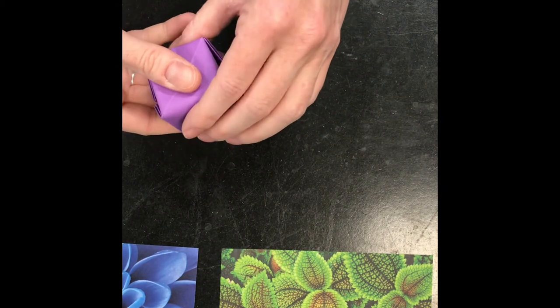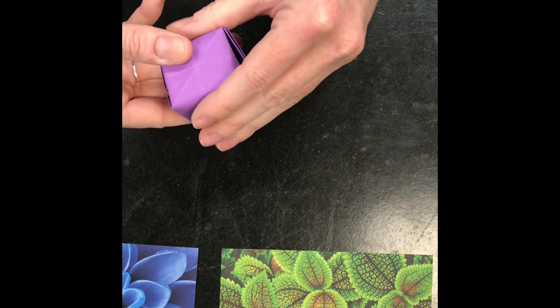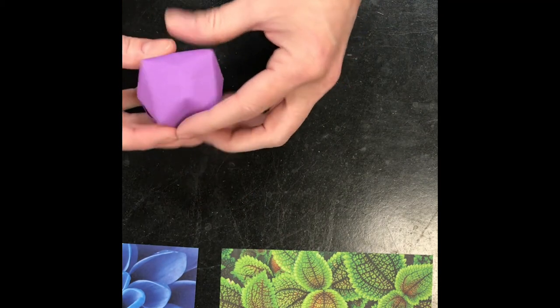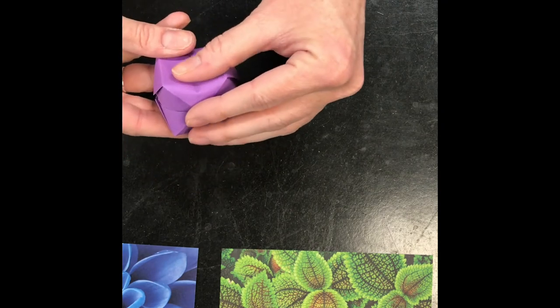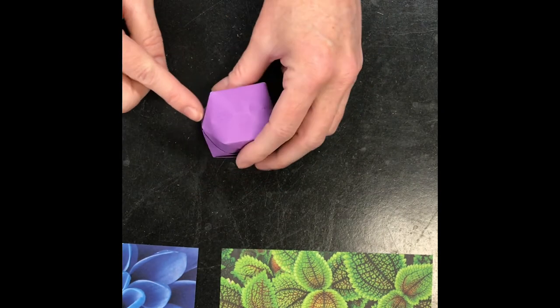And you can kind of rework it to make it a little more cube-like. If it starts to fold in again, you can always inflate it again by blowing into that hole that's on the edge.